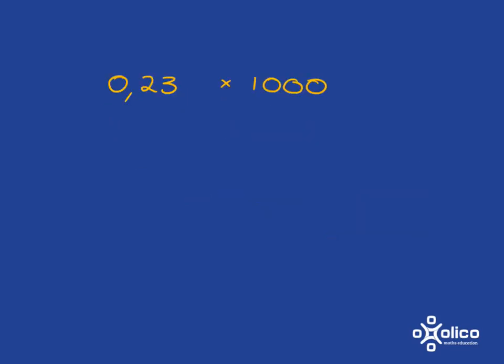So if we want to do something like 0.23 multiplied by 1000, we've got to move the place value over 1, 2, 3. And so what we're going to do is move the comma and we're going to move it 1, 2, 3 right, and put a zero in there. And so we get 230 as our answer.